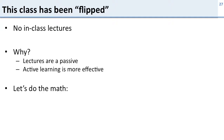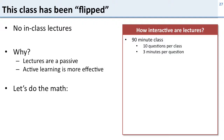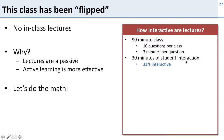Let's do the math to figure out whether lectures are really that passive, because a lot of people say they want to go to lectures so they can ask questions. Take a simple case: a 90-minute lecture with 10 questions, each taking three minutes — that's 30 minutes of interaction, a third of the class. That seems pretty good, though it also means spending a third of lecture time answering questions.